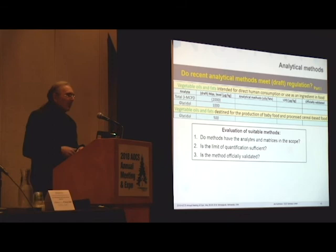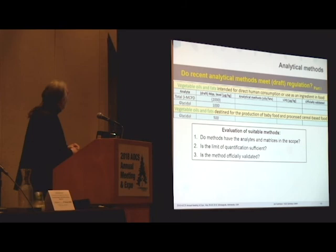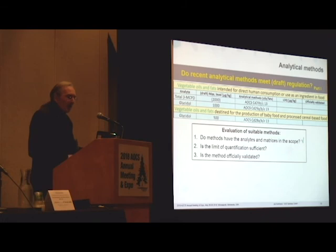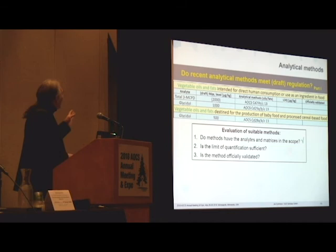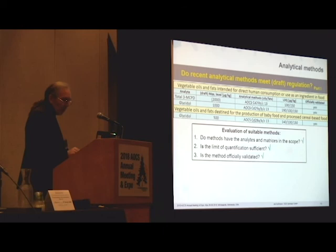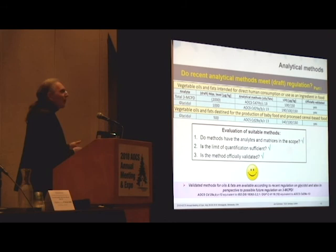Coming to the last part of my presentation: do we have analytical methods that serve regulation? To evaluate this, we have displayed the demands for vegetable oils and fats — we have clear values for glycidol and tentative values for MCPD, which might increase in the future. The question is: do we have methods available that cover these matrices and scope? Yes, the AOCS methods do. In regard to the total MCPD, the method has to be modified to include 2-MCPD. But the limits of quantification are more than sufficient relative to regulation. And of course, the methods are validated. These AOCS methods have also become ISO standards.